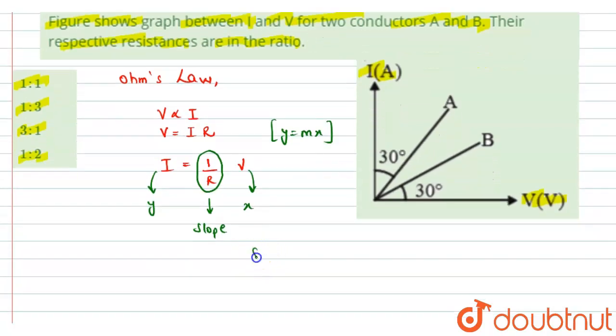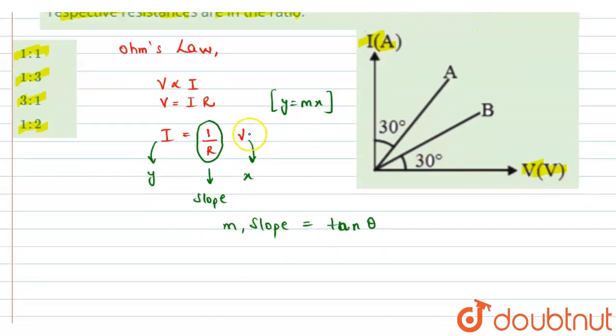And further, we know that a slope of a graph is represented by the tan of the angle, tan theta. And it is given by M. So now, if I have to find the resistance, then I have to find the slope of the graph for the respective conductors.